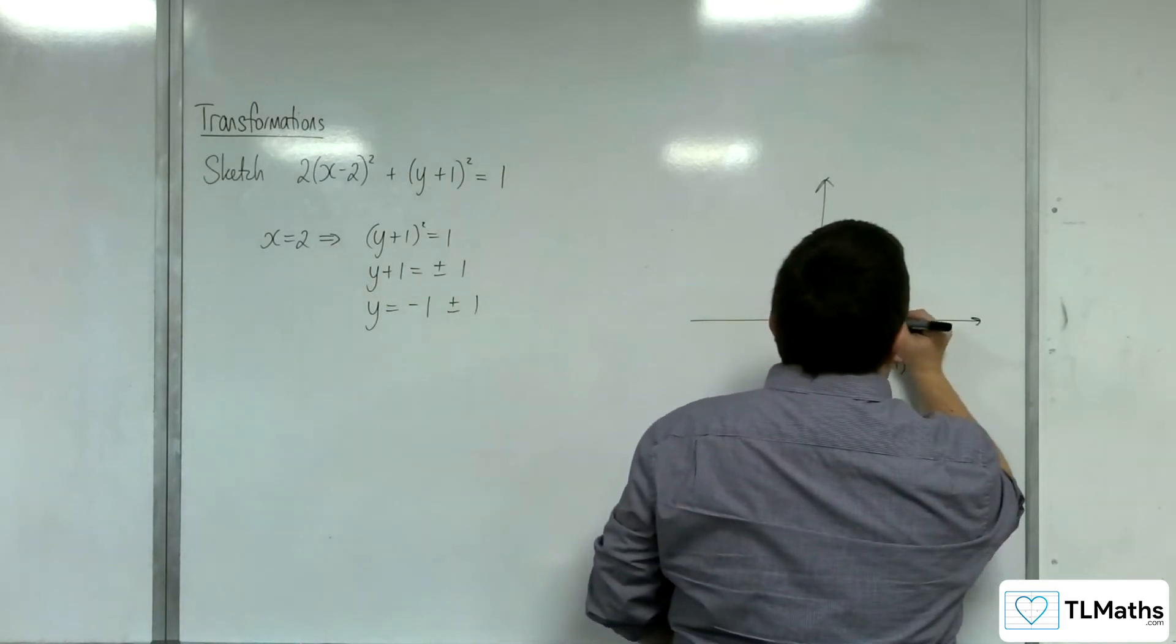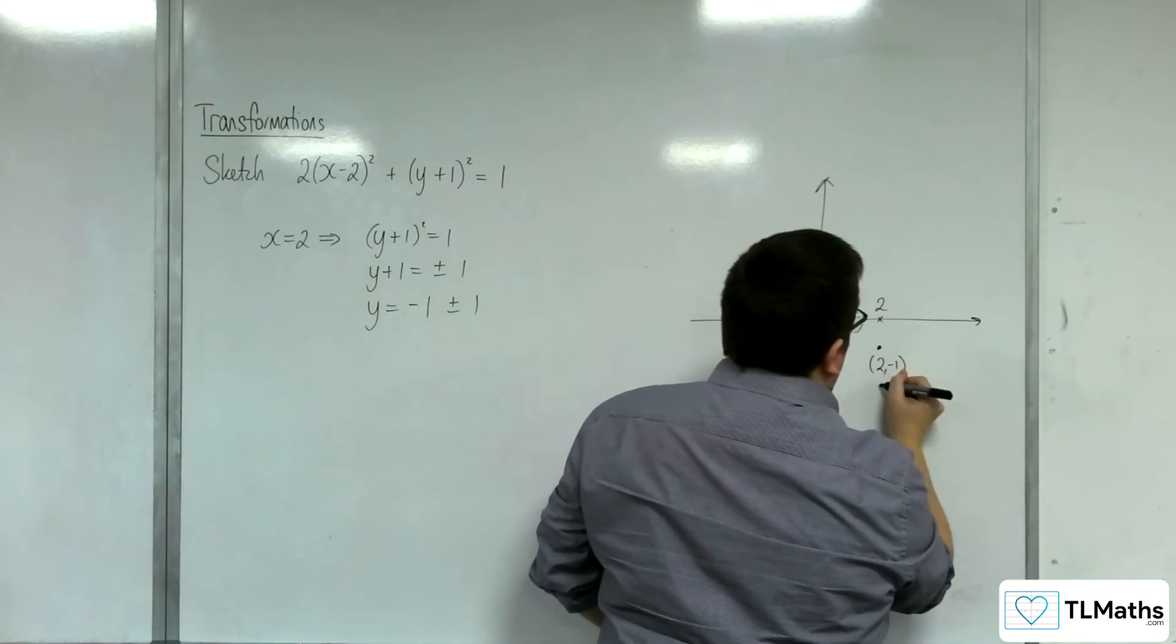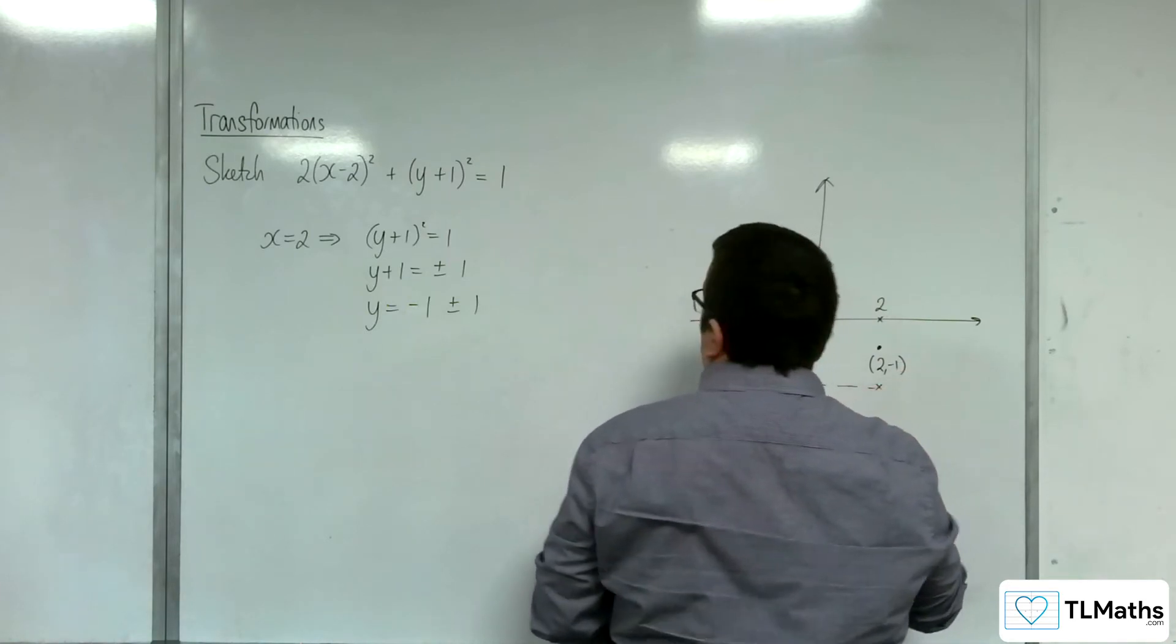So that means it's going through the point at (2, 0) and this point at (2, -2).